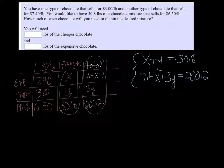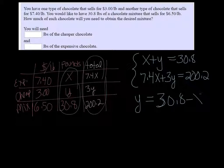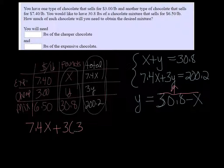I'm going to use substitution, and I'm going to solve for Y with the top equation. So Y is equal to 30.8 minus X. And then if I take that and I plug it in for Y in the second equation, I can get it down to one variable. So I have 7.4X plus 3 times the 30.8 minus X in parentheses equals 200.2.